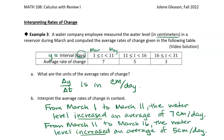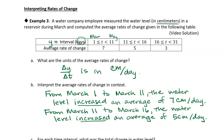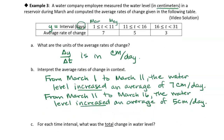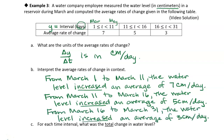And finally, for the last time interval, we can do the same thing. From March 16th to March 31st, the average rate of change is still increasing, but it's increasing only by 3 centimeters per day. So those are our interpretations.